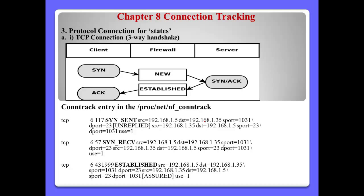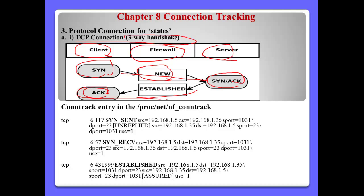Connection Tracking Number 3: Protocol connection states. Let's study TCP connections more deeply. TCP connection — normally we call this the three-way handshake. If the client sends a SYN packet to the server, we say this connection is 'New'. If the server replies with SYN and ACK, and the client also sends ACK, then we say this connection is 'Established'.